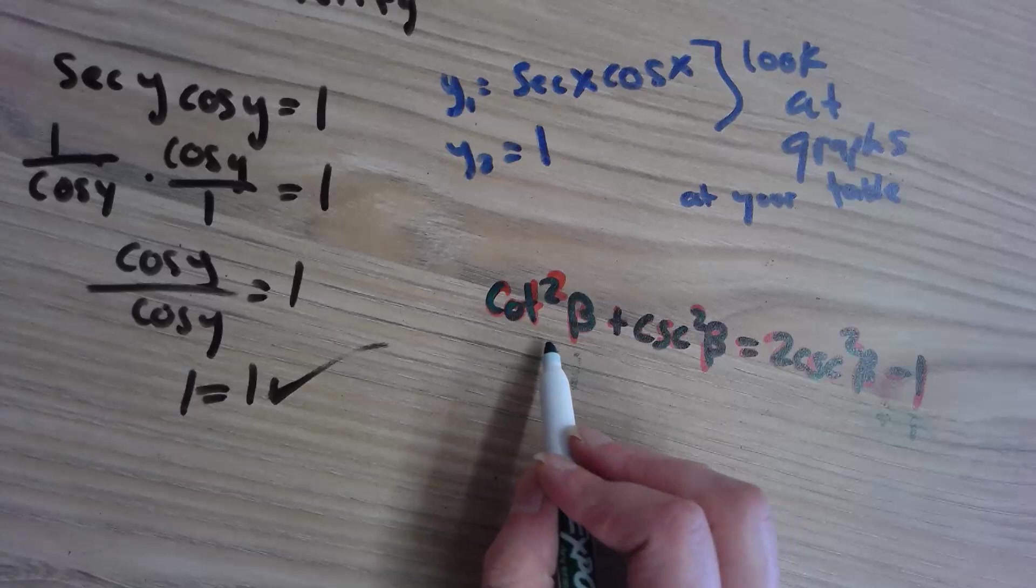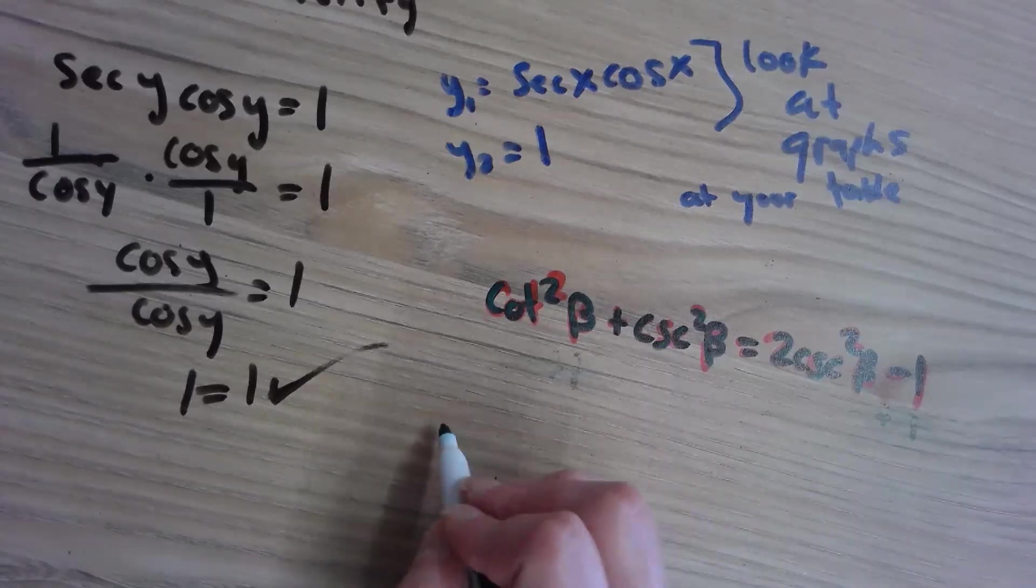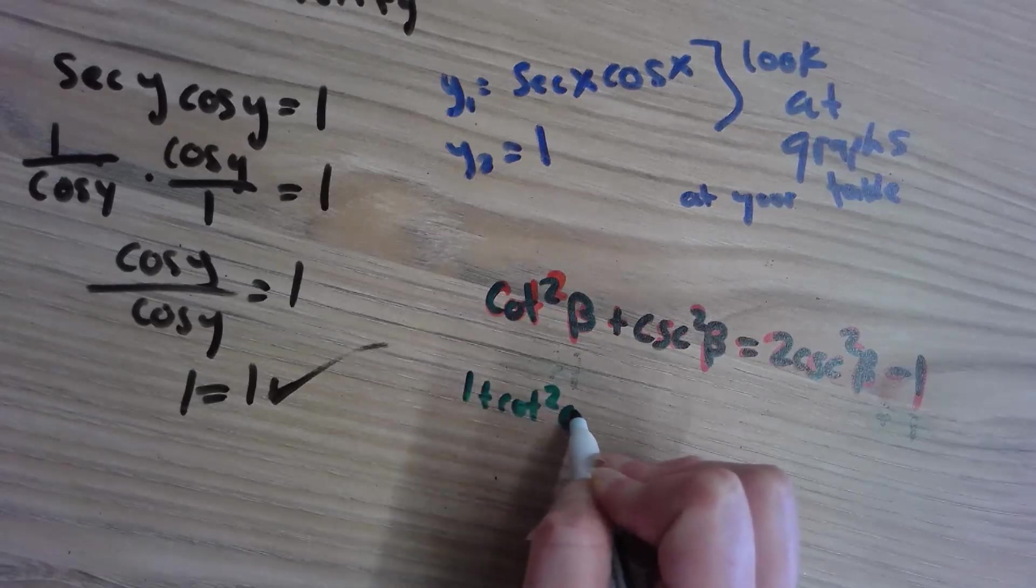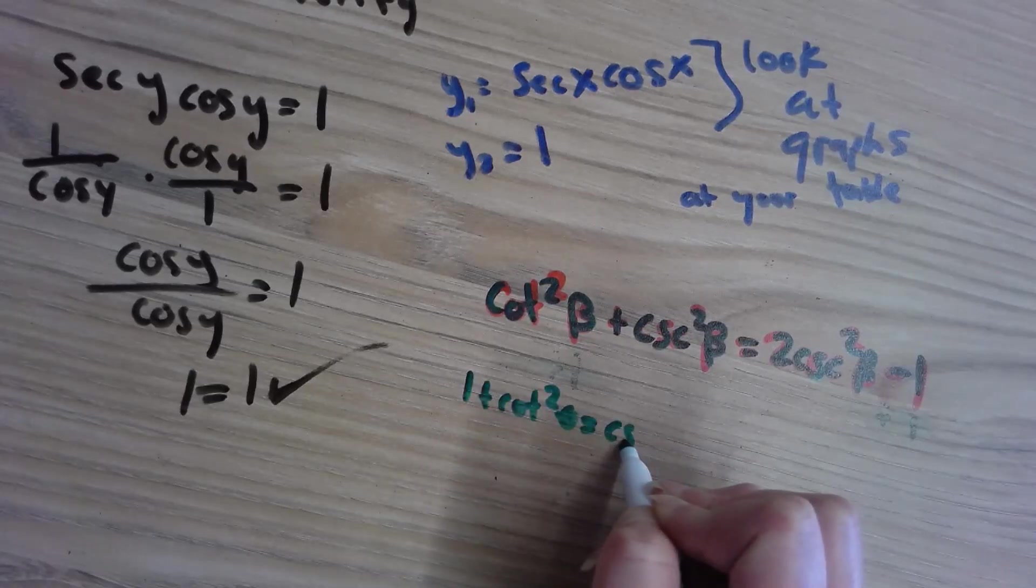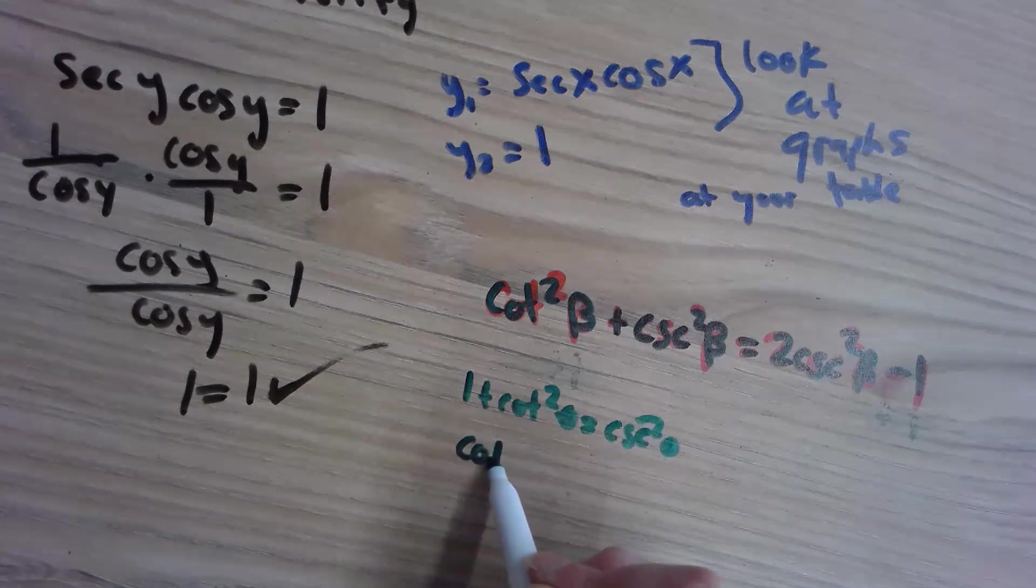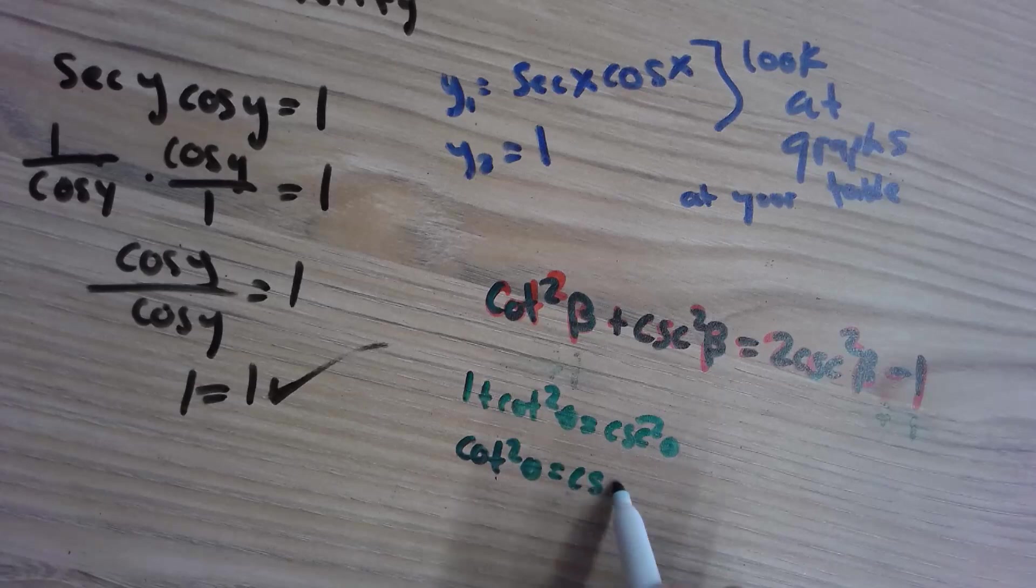I'm going to take this idea that it's one plus cotangent squared theta equals cosecant squared theta. I'm going to take that idea and say cotangent squared theta equals cosecant squared theta minus one.